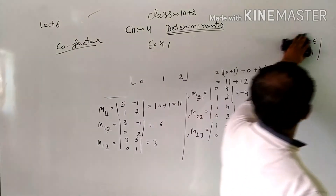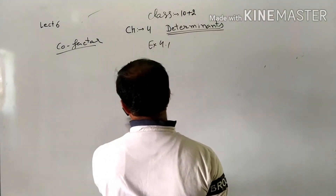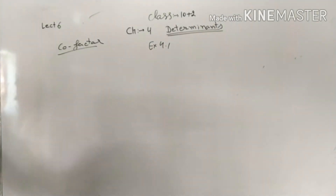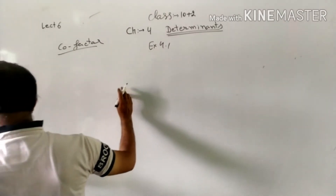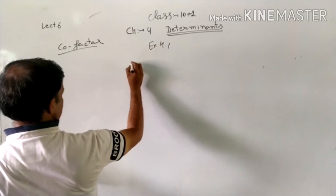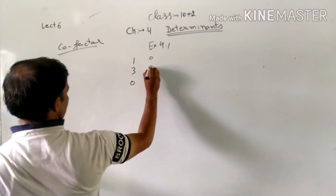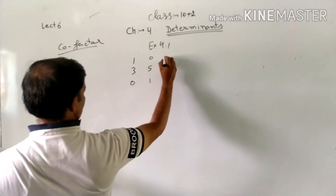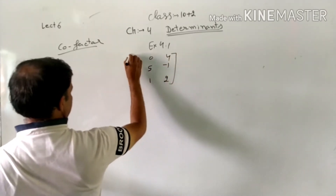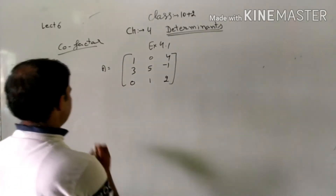Now let us learn to find co-factors directly. We will discuss the next question. For the co-factor question, we take the same matrix: [1, 3, 0; 0, 5, 1; 4, -1, 2]. What do we need to find from this? Co-factors.